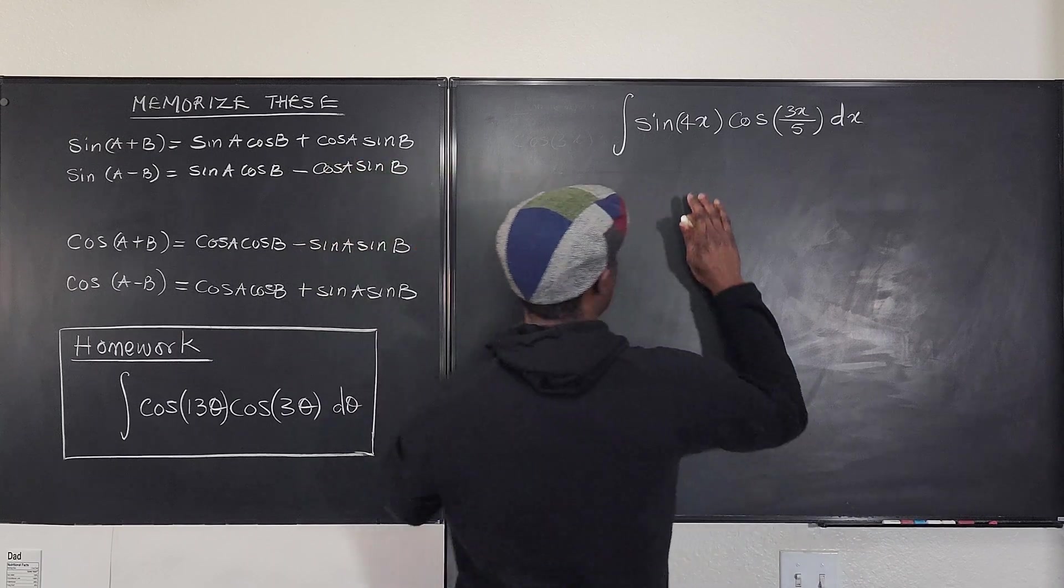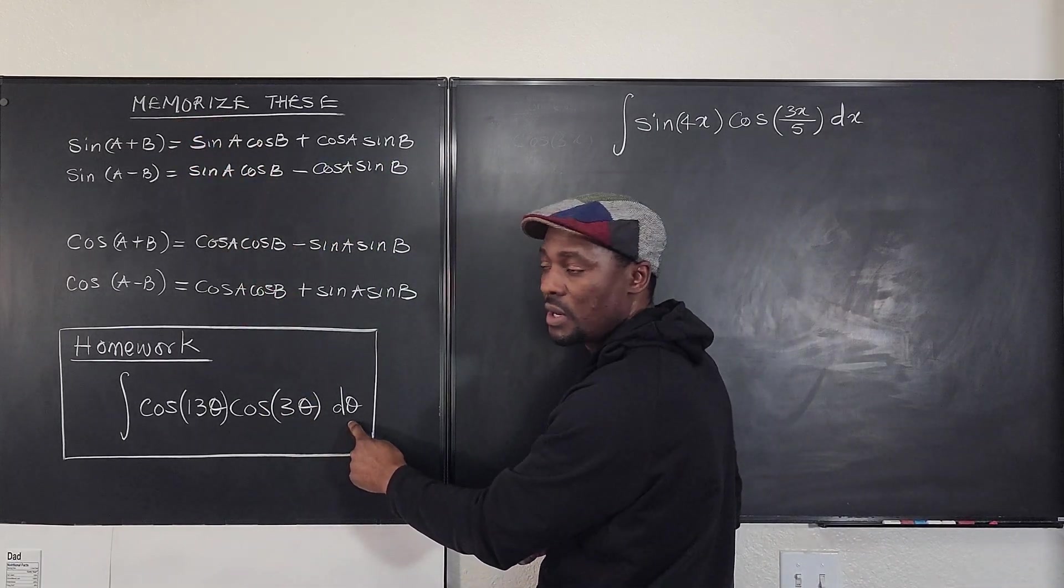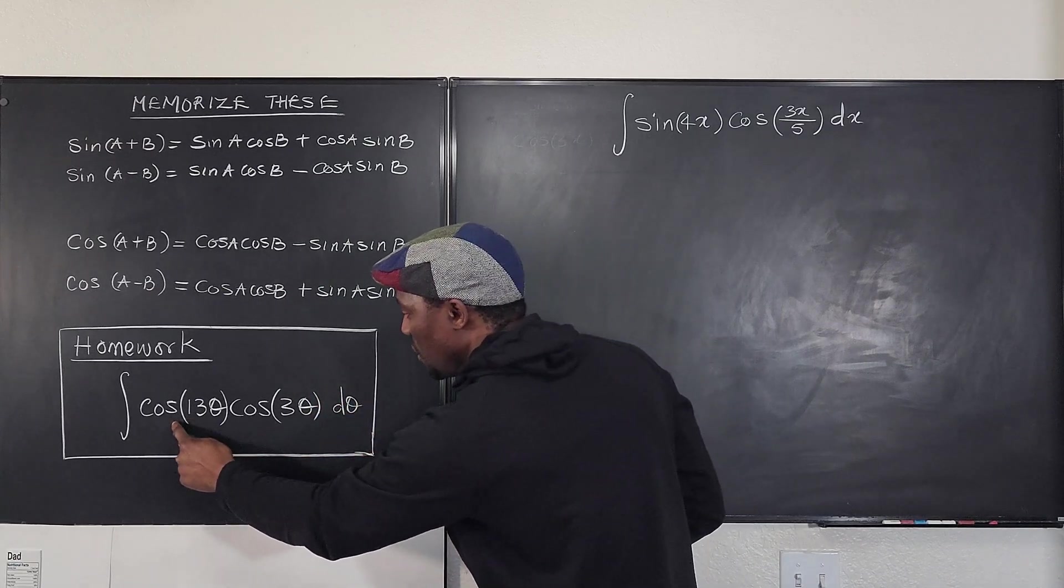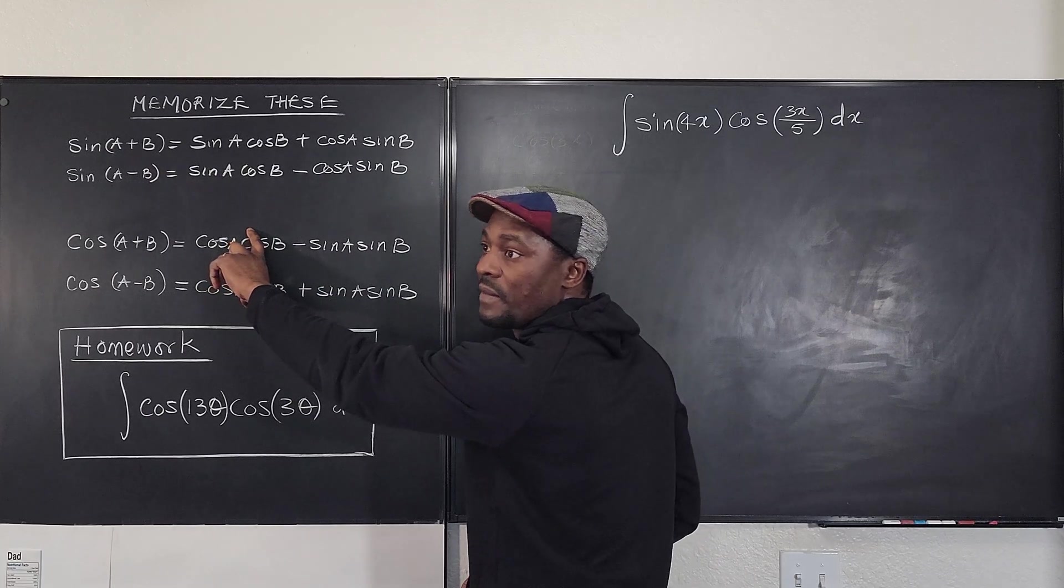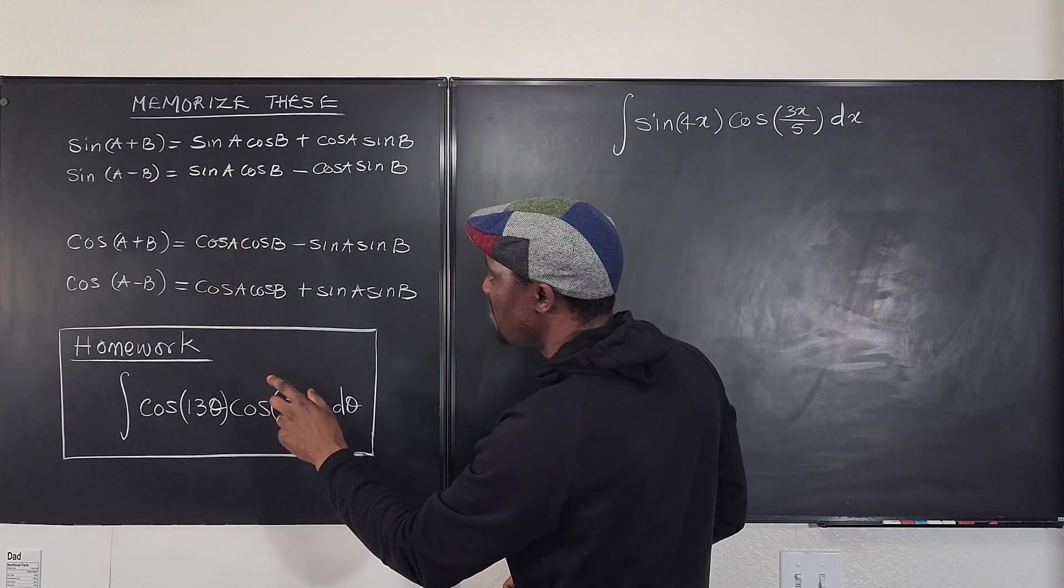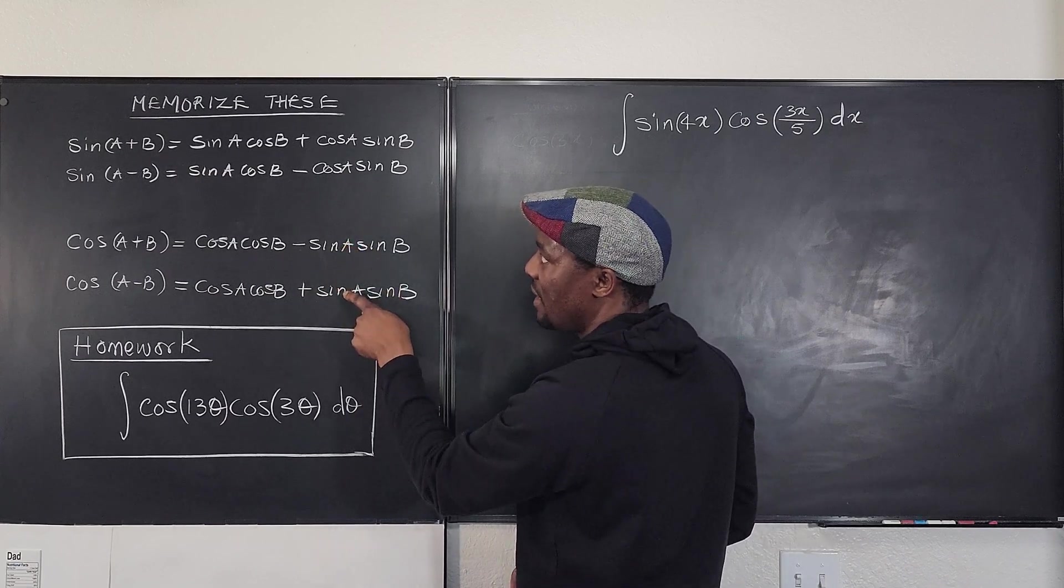So let's apply that here. Because it's a product of sine and cosine, we're doing both of these. Now for your homework, because it is the product of cosine and cosine, your focus will be on this second part. The part you want to keep is this part. You're going to eliminate this part by adding them together.